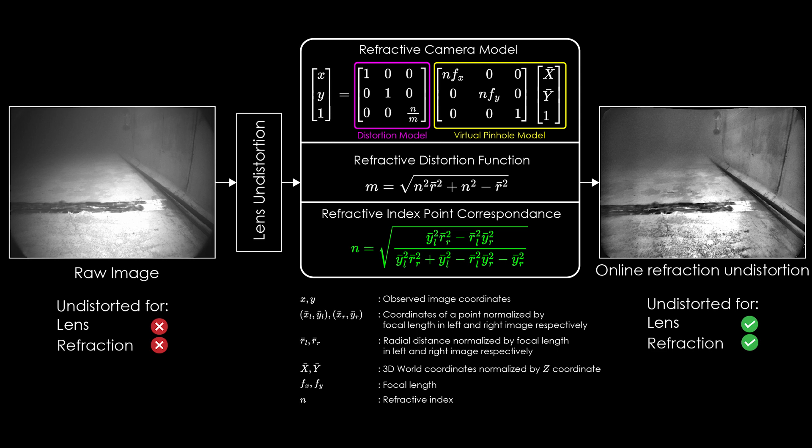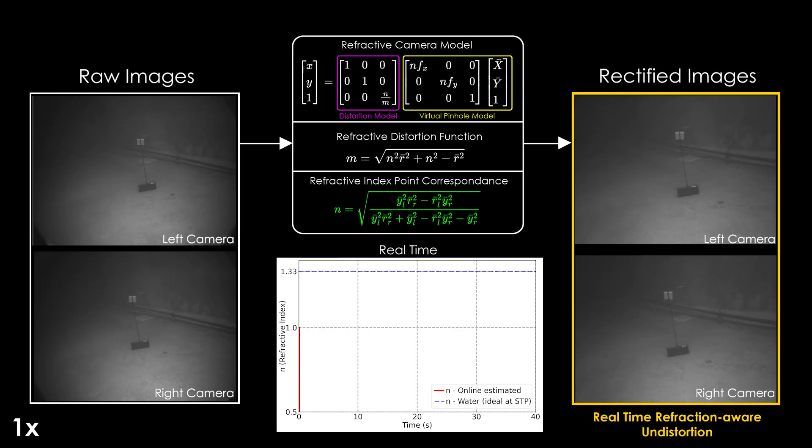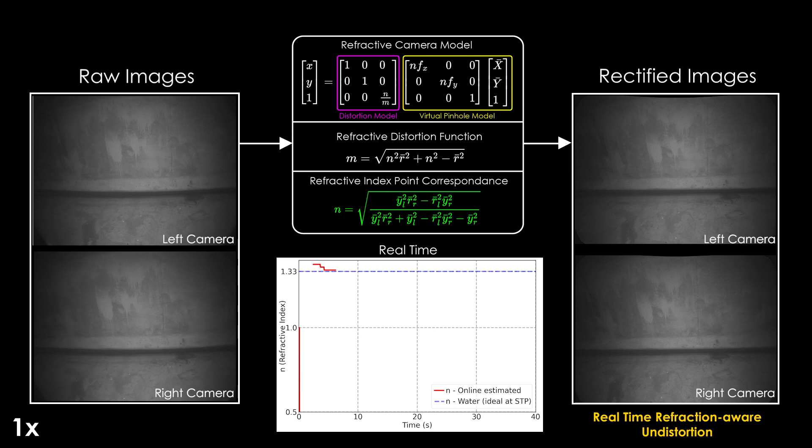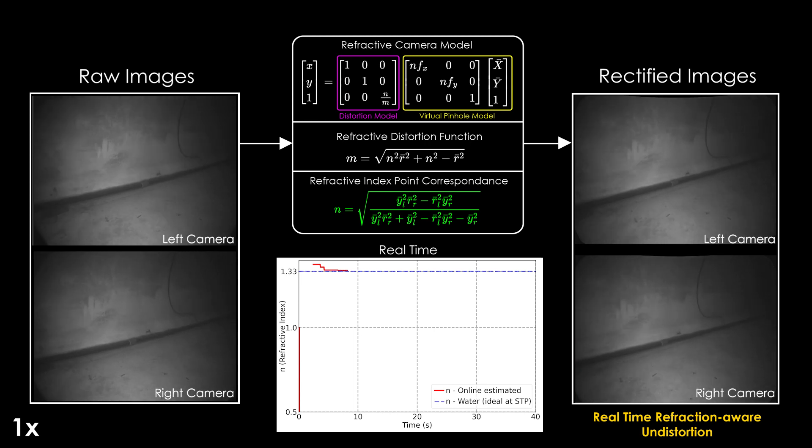We propose a model that is separable as a virtual pinhole camera model parametrized by refractive index and b a refractive distortion model which is formulated as a function of radial distance for a stereo camera pair calibrated in air and rectified for lens distortion. The refractive index can be estimated online given the point correspondences.